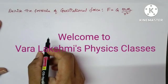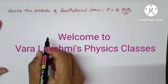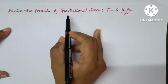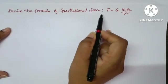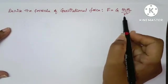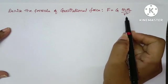Hi friends, welcome back to Lakshmi's physics classes. In this video I am going to explain how to derive the gravitational force formula F = G m1 m2 upon r square.